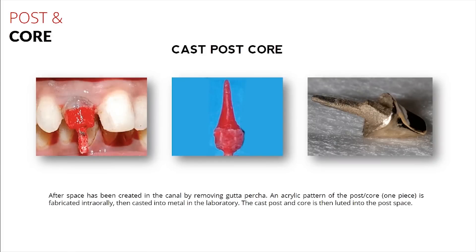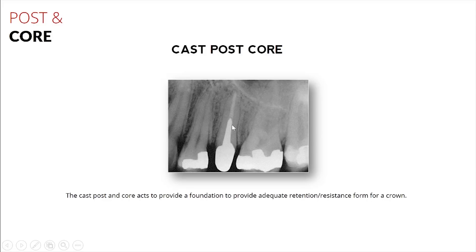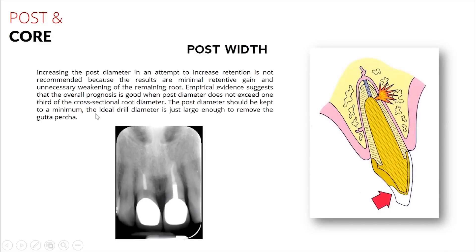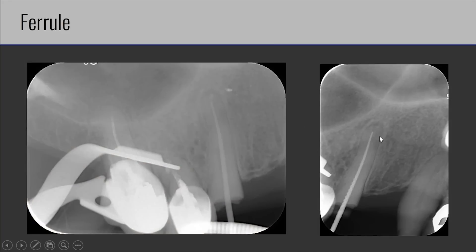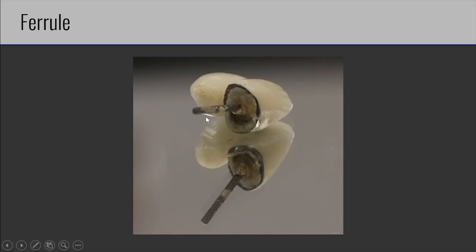To summarize: the purpose of the post is to retain the core buildup. A post does not reinforce the tooth — in fact it decreases its strength and makes it more susceptible to fracture because a post acts like a lever arm. They used to think that the post would help strengthen the tooth by reinforcing it, but really it just acts to weaken it a bit because we're drilling to make that post space. We're balancing that out with the idea that this post is necessary for the sake of holding this buildup in place.